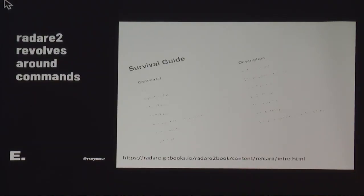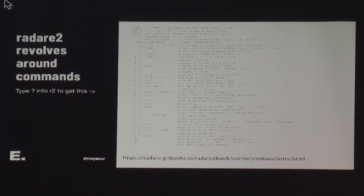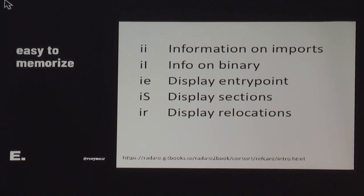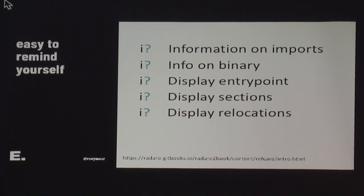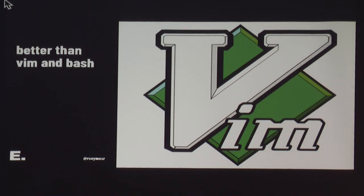That's a list of commands that I coolly tilted to the side. If you have Radar 2 open right now, you could hit question mark or I-question-mark and see it — you'd also see a list of help. For example, if you want imports, in Radar 2 you'd type II and hit enter. Or if you wanted the entry point, you'd say IE and hit enter. But now that it's off the screen, how do you display sections? It was capital S. It's kind of on this level of interfaces, like Vim — really hard to get out of if you don't know how.